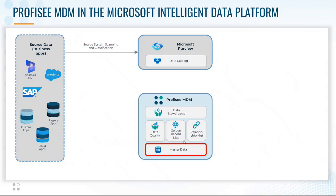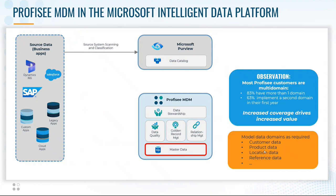Working in parallel, Prophecy MDM is used to create master data entities that model key domains that we're interested in looking at, such as customer, product, location, reference data, and so on. A quick observation: we find that most Prophecy customers are multi-domain — 83% have more than one domain, and 63% have implemented a second domain in their first year. We encourage that very much because increased coverage of the key master data domains increases the value of your data and your data estate and all the subsequent activities.